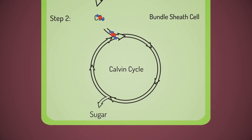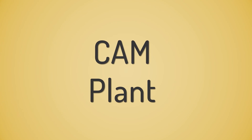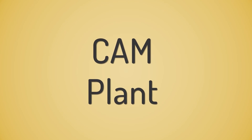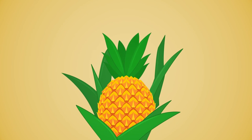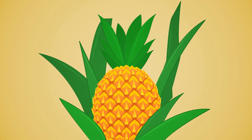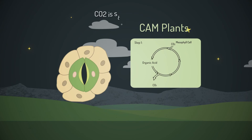In these bundle sheath cells, CO2 is incorporated into the Calvin cycle. A second type of plant that is adapted to live in harsh conditions is a CAM plant, such as a pineapple. A pineapple opens its stomata solely at night to receive the CO2 and stores it as organic acids in vacuoles.